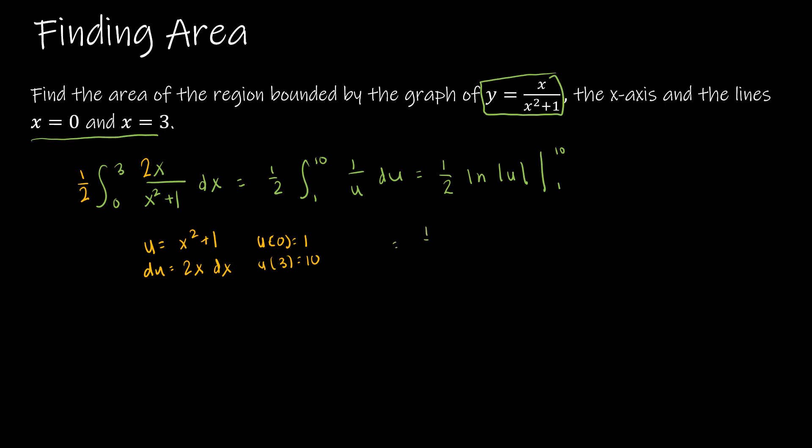If I plug in 1 half, and then I've got the natural log of 10—and I'm going to drop the absolute value, because 10 is already positive—minus the natural log of the absolute value of 1, which the natural log of 1 is 0.